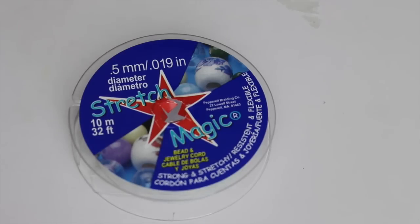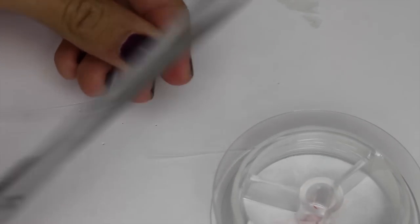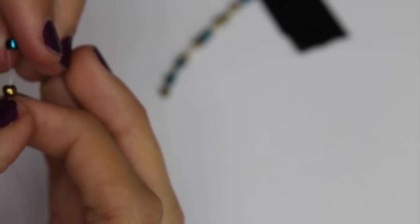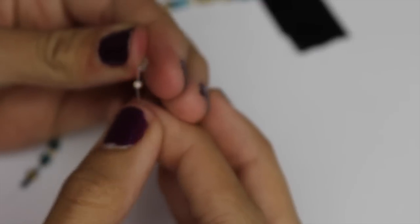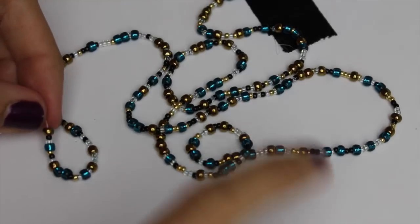I always like to cut my string extra long just in case I need more, and then I am taping one side of it down. Then I'm just randomly stringing on the beads with the other end, and this is completely random. You could totally do a pattern too and it would look super cute, but I just kind of wanted mine to be a little bit more random.